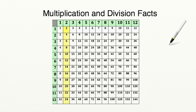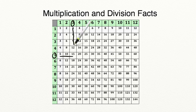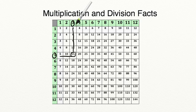Let's try some harder problems. Can you tell me the product of 5 times 3? Let's skip count together: 5, 10, 15. Now we've lined up with our column of 3, so the product of 5 times 3 equals 15. You can also use this for division — you can say 15 divided by 3 equals 5, or 15 divided by 5 equals 3.